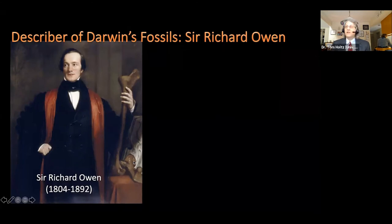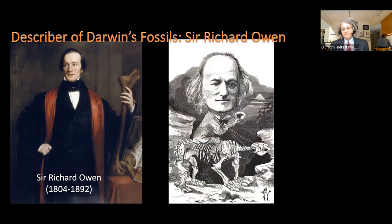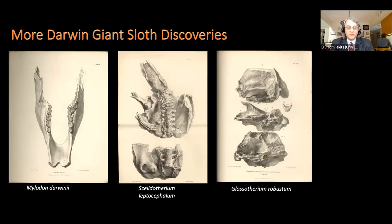Owen was a very famous figure in the history of paleontology — namer of Dinosauria, describer of the first discovered specimen of Archaeopteryx, describer of the moa. He had a major contribution to basically every field within at least terrestrial vertebrates, and some of the marine ones as well. He was one of the founders of what would become the Natural History Museum of London — a big public figure who unfortunately, later in his career, was at loggerheads with Darwin and Darwin's advocates. Some of the specimens that Darwin discovered were in fact brand new genera and species to science. He made discoveries of several new types of giant ground sloths.